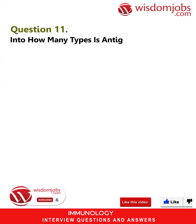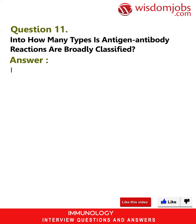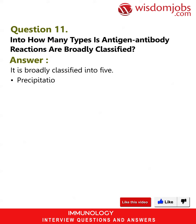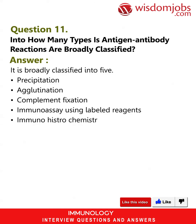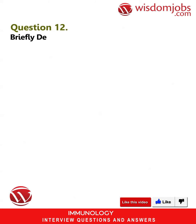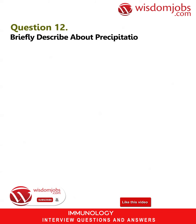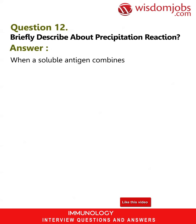Question 11: Into how many types are antigen-antibody reactions broadly classified? Answer: It is broadly classified into five types: precipitation, agglutination, complement fixation, immunoassay using labelled reagents, immunohistochemistry, and immunofluorescence.